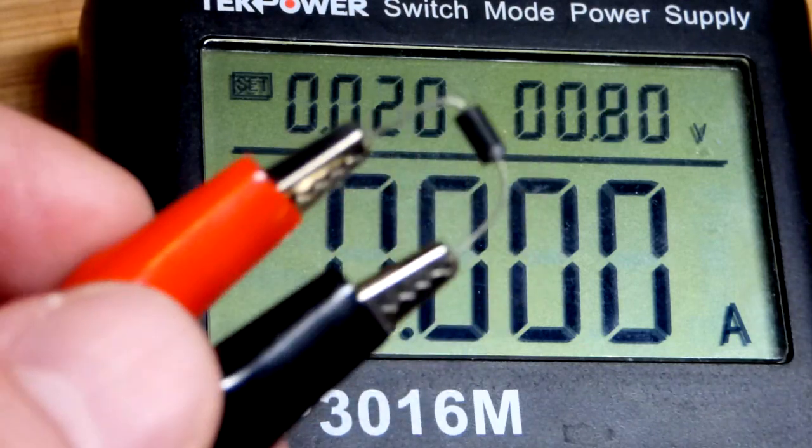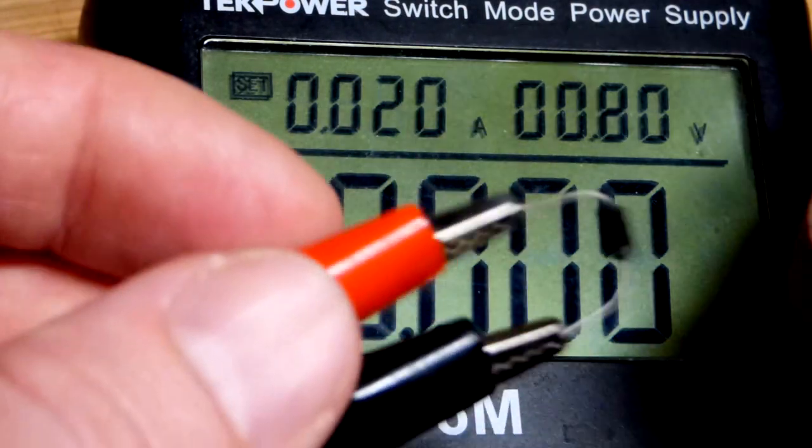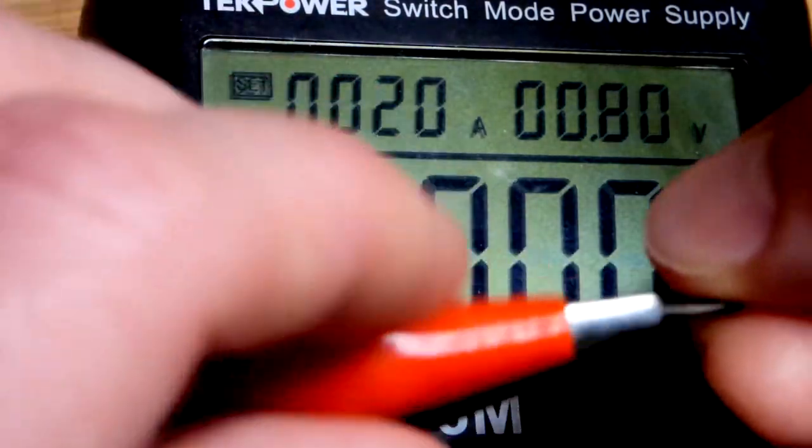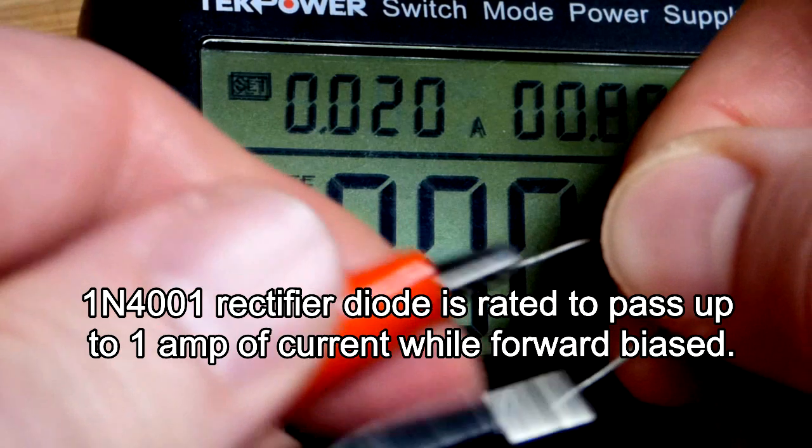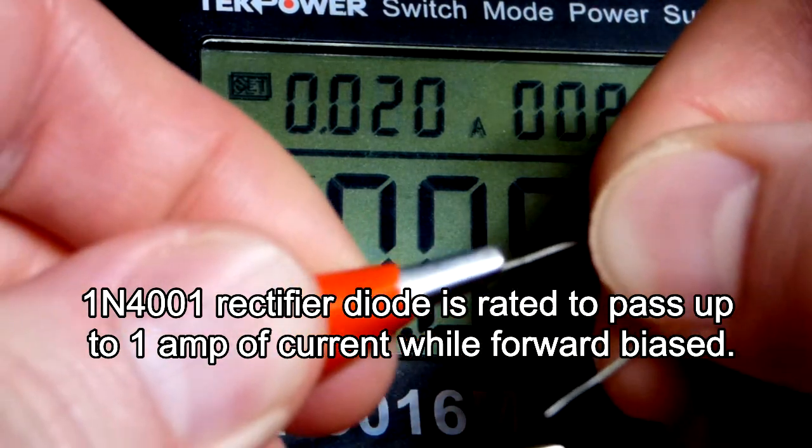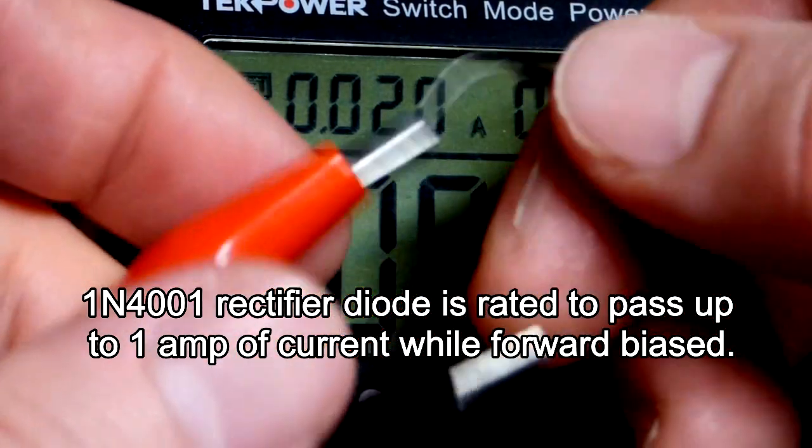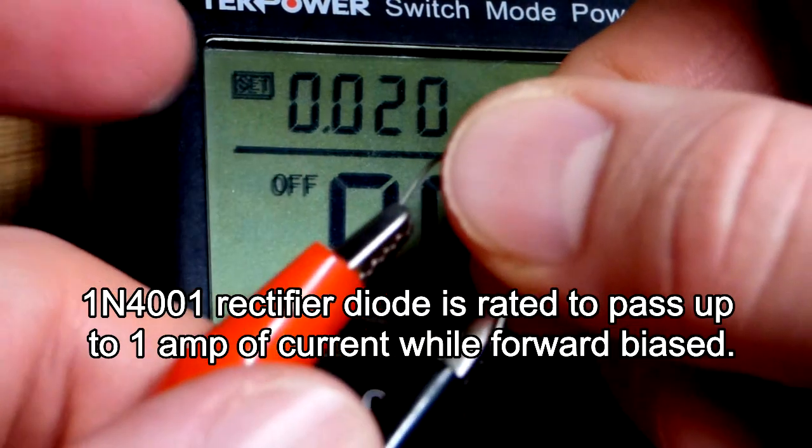And so this is much better, the rectifier diode for protecting circuitry because it doesn't drop as much voltage. And then also we can reverse bias it with a lot more voltage than the LEDs.